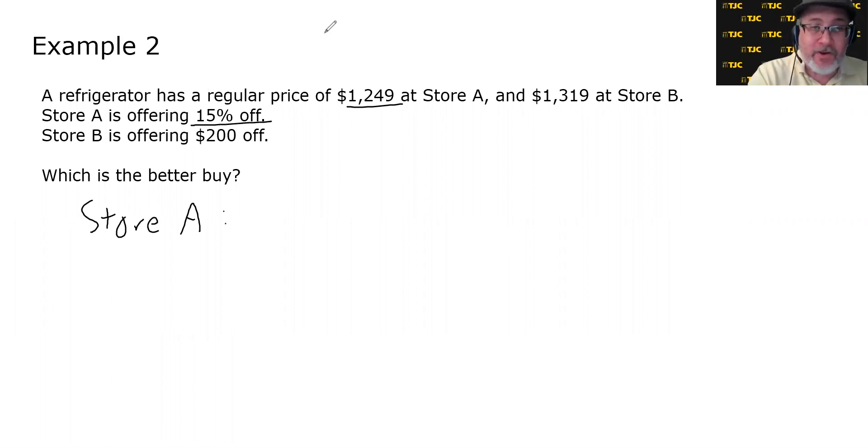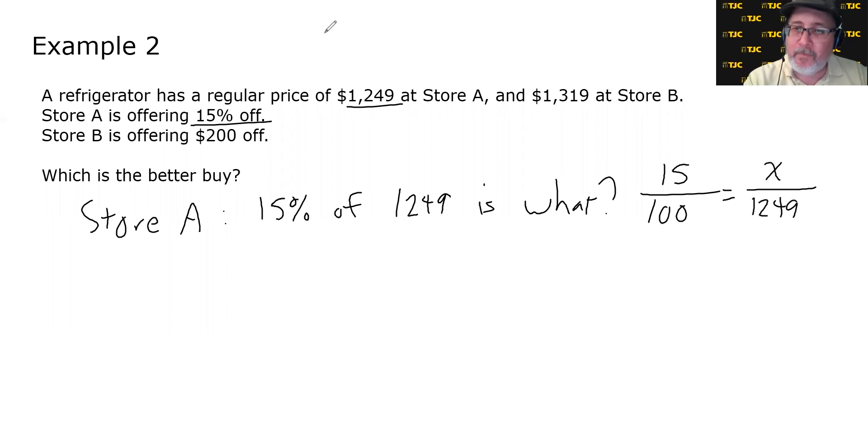So the first thing we need to do is figure out 15% of the price, $1,249. We need to answer the question, 15% of $1,249 is what? Let's approach this using the proportion method, which is putting the percent, 15 over 100. Putting the is number on top, which we don't know, and the of number on the bottom, $1,249. I'll leave it as an exercise for the viewer to cross-multiply and then solve. But if we do that, I'll call out the moves that I'm doing, 15 times $1,249. That will eventually get divided by 100, and we get $187.35.